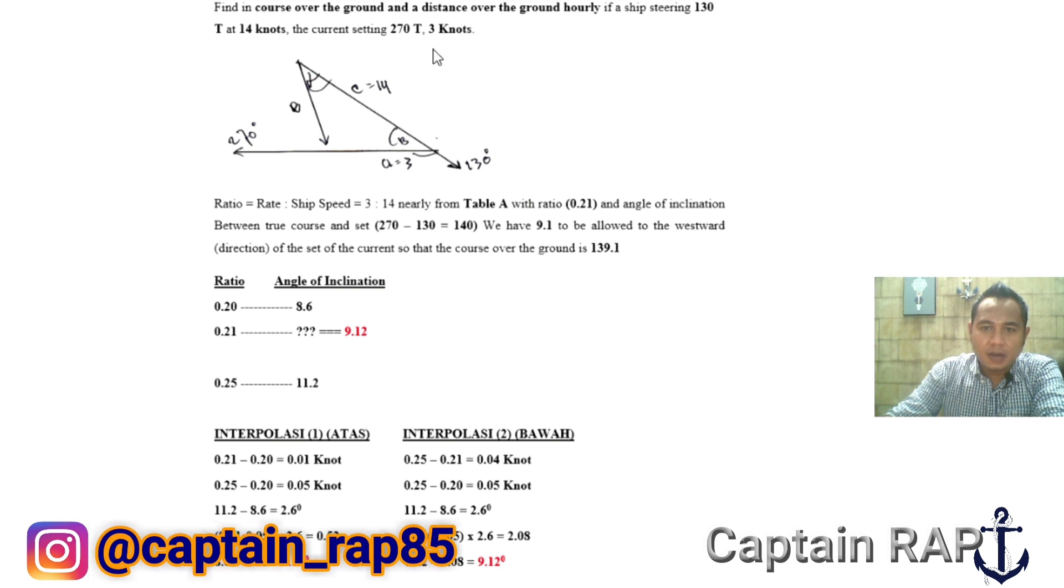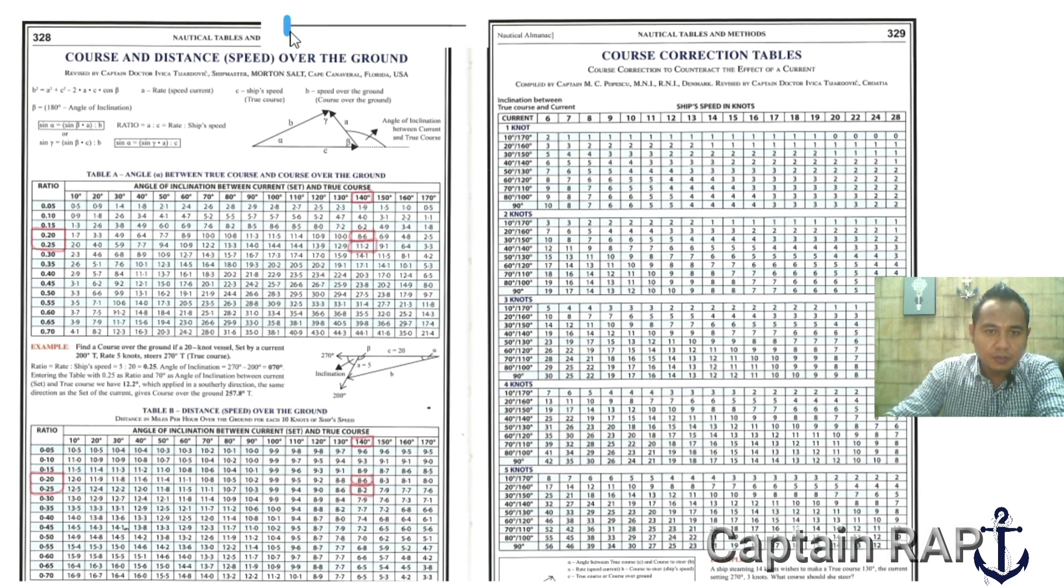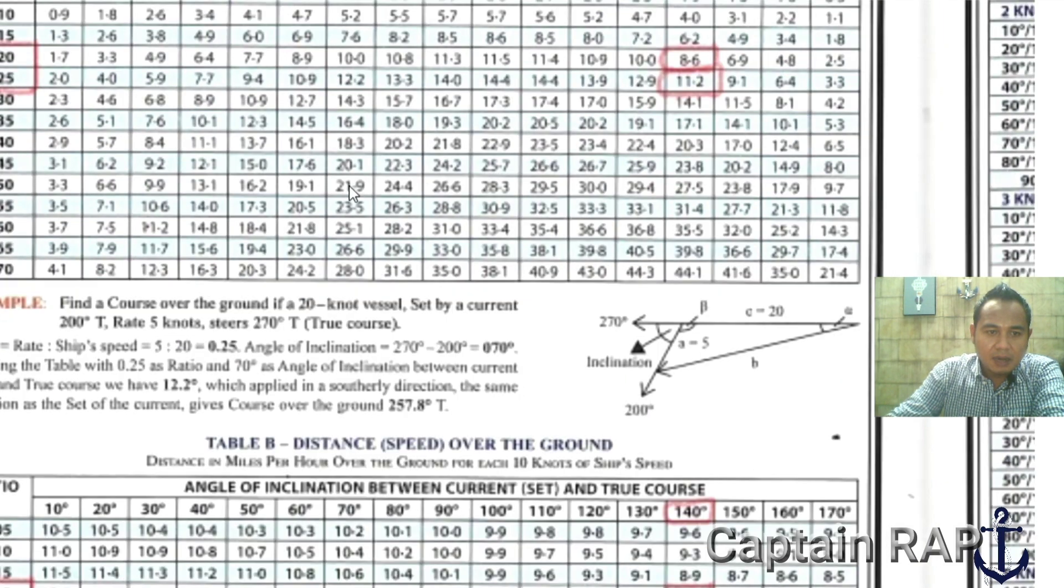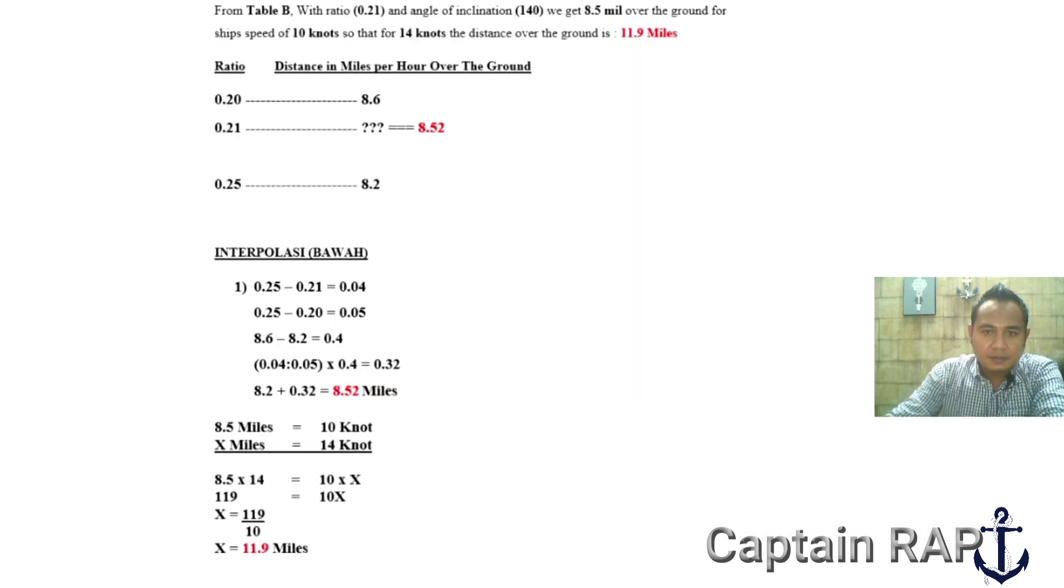Itu yang pertama mengenai course of the ground. Mengenai perhitungan distance of the ground, ini kita membutuhkan tabel B. Jadi kita kembali lagi ke tabel B yang ada di halaman 328. Jadi ini tadi tabel A, kemudian di bawahnya ada tabel B. Nah tabel B inilah untuk mencari distance in miles per hour over the ground for each 10 knots of ship speed. Jadi masih sama variabelnya tadi 0.21 berarti diantara 0.20 dengan 0.25, kemudian angle of inclination-nya berarti diantara 8.6 dengan 8.2. Artinya kita harus melakukan perhitungan interpolasi lagi karena 0.21 tidak tersedia di sini.